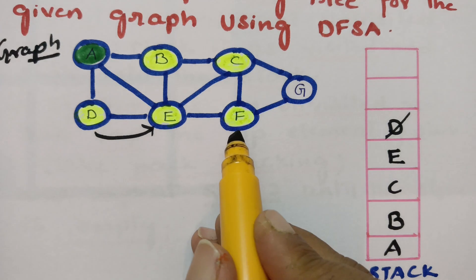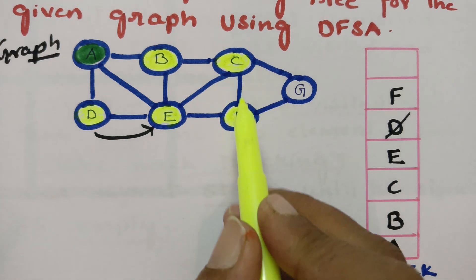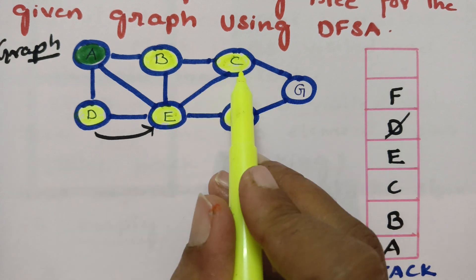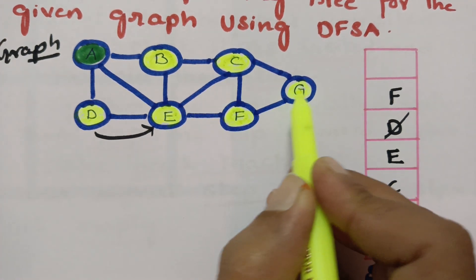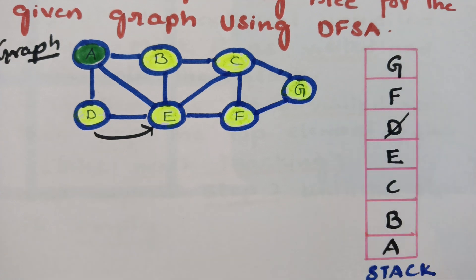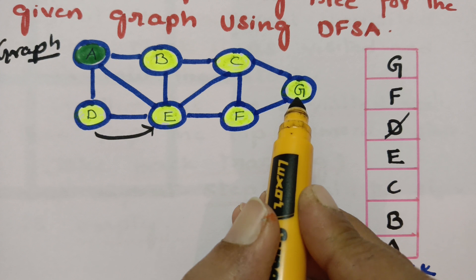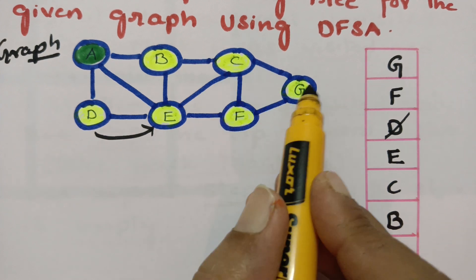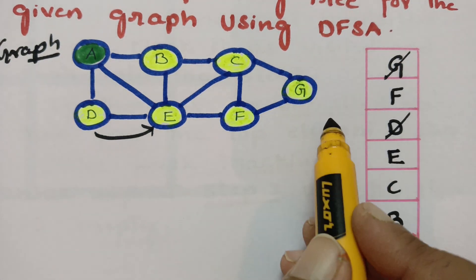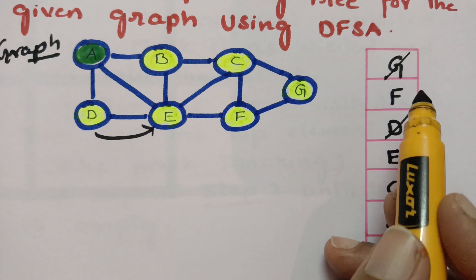After visiting F, I push it into the stack. F has three adjacent vertices: E, C, and G. E and C are already visited, so now I visit G and push it into the stack. From G, there is no route because all adjacent vertices are already visited. Since there are no unvisited adjacent vertices, we pop G and go to the next top element, which is F.